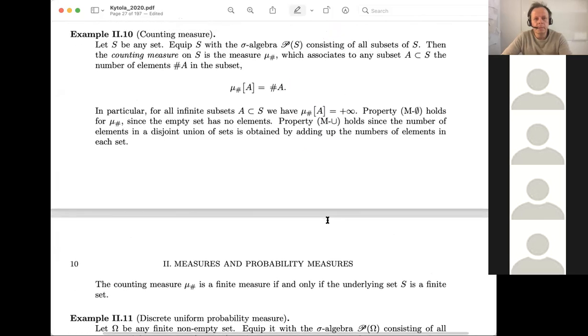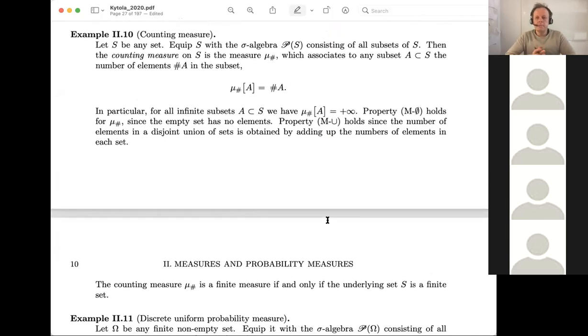So here we have the first example, and that's maybe the most important example, perhaps. So the counting measure. Think about S. Pick your favorite set. It could be a set of numbers. It could be a set of animals labeled by some mechanism, or it could be something uncountable. It could be the set of all continuous functions.